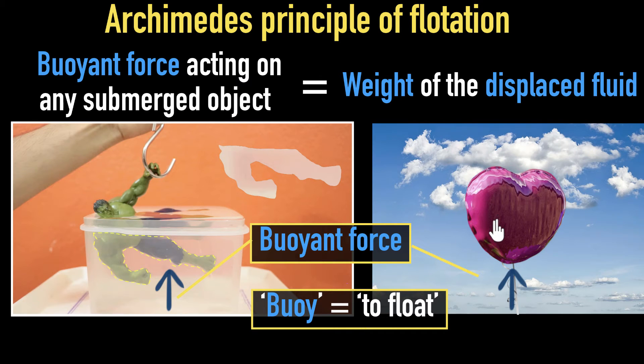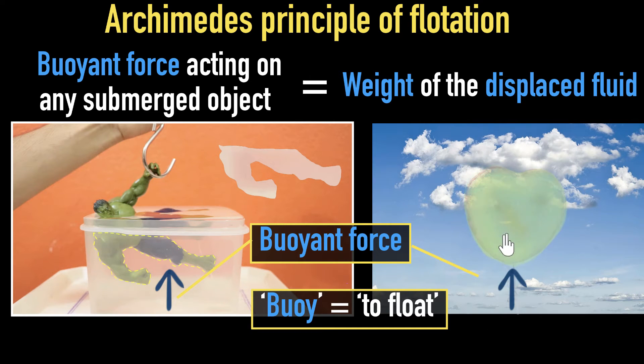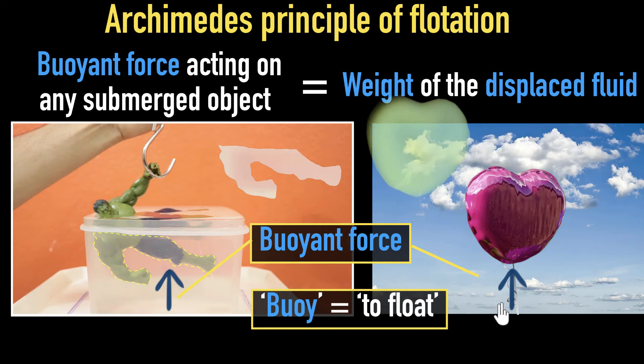And the same thing is going to happen over here as well. Before the helium balloon came over here, it was occupied by air, which I'm showing by green so that we can see. But once the helium balloon comes over there, that air must have moved somewhere else to make space for the helium balloon. Now, of course, the air and the liquid will not maintain their shape—I'm just showing it this way. But anyways, the air must have moved. So again, this is the displaced air. And Archimedes principle says, whatever is the weight of this displaced air, that will be the buoyant force acting on the balloon.